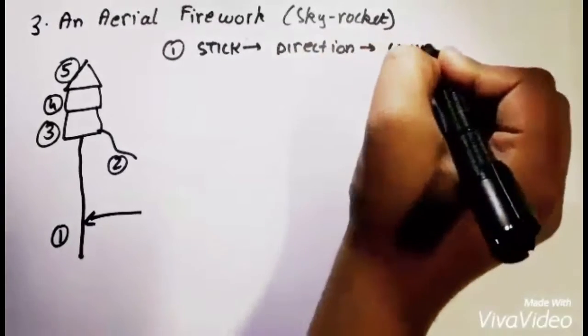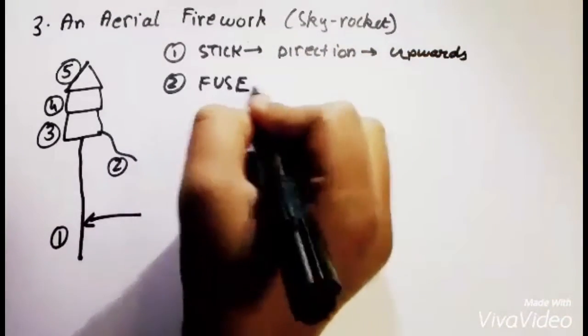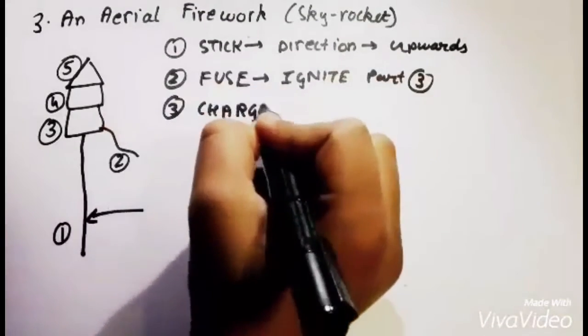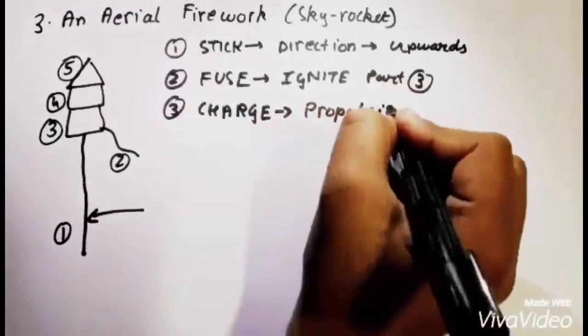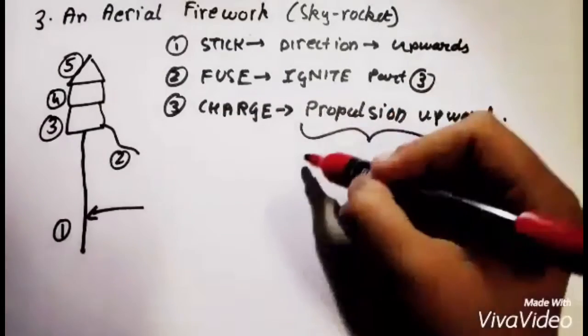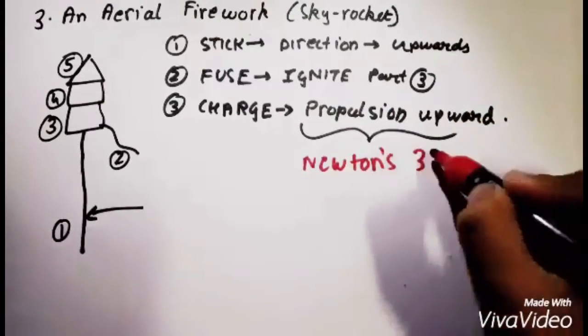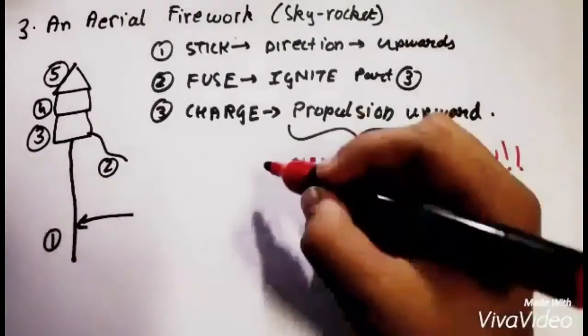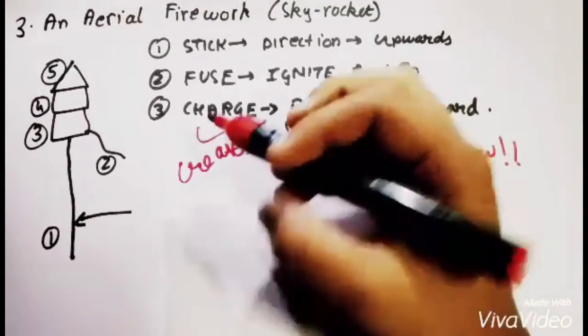The first one being the stick which gives the direction to the skyrocket to go upwards. The second is the fuse which is used to ignite the third part, which is the charge. The charge is used to propel the rocket upwards. The propulsion works on basic Newton's third law which states every action has an equal and opposite reaction. Yes, there is physics in fireworks too.